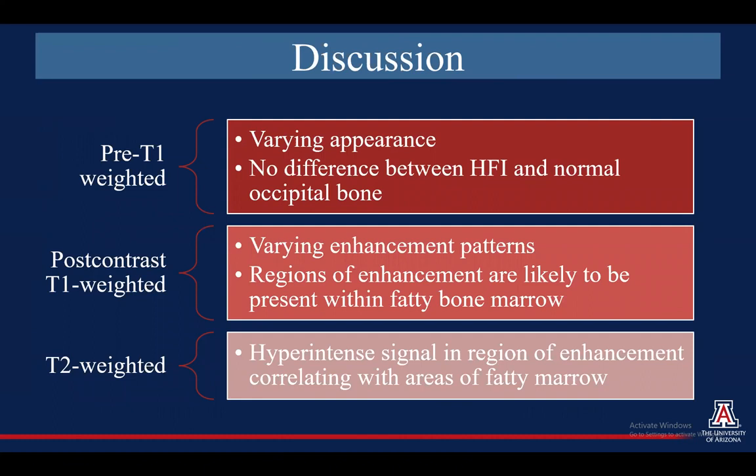Overall, on the pre-T1 images there's a lot of varying appearance and no difference in quantitative signal between HFI and normal bone. On the post-contrast T1-weighted and T2-weighted images, we found that areas of enhancement were more likely to be present with fatty bone marrow, and there are many different types of enhancement patterns, which may be important going forward in knowing how to differentiate between HFI and a metastatic lesion.